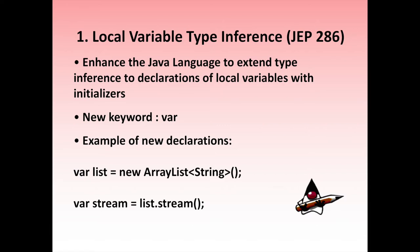Note that the var keyword can only be used for local variables — that is, variables inside methods or code blocks. You cannot use it for member variable declarations inside the class body. Also, it doesn't make Java a dynamically typed language like Python. Java is still statically typed, and once the type is assigned you cannot change it — var name equals Java is okay, but then name equals 3 is not okay. This is one of the most eye-catching features of Java 10, reducing boilerplate code for local variable declarations, especially useful when a method returns a complex generic type.